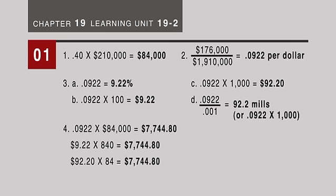Again, notice we get the same property tax for all three. When you're doing mills, you take the tax rate, 92.20, multiply it times .001 times the full assessed value of 84,000, and using mills, you have a property tax of $7,744.80.